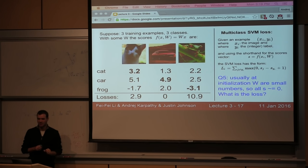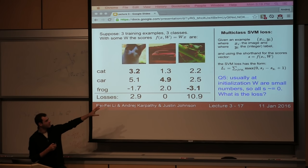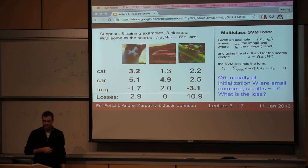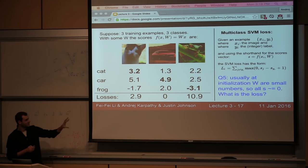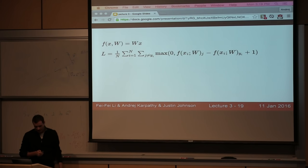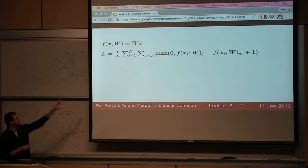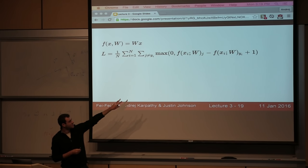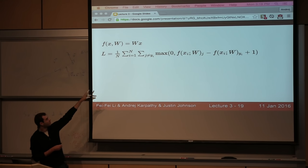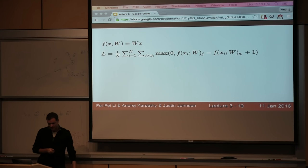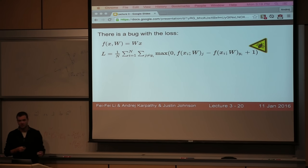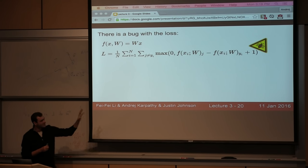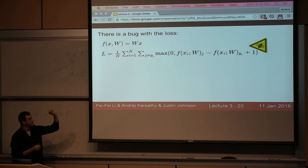Going back to this formulation — any more questions? This formulation, if you write it down for just two classes, reduces to the binary support vector machine loss. We'll see a different loss function soon and compare them. At this point, we have this linear mapping to get scores and the SVM loss function in its full form: differences between scores plus 1, summed over incorrect classes, averaged across all examples. Now I'd like to convince you there's actually a bug with this loss function in isolation.